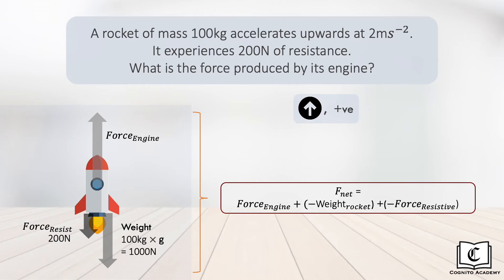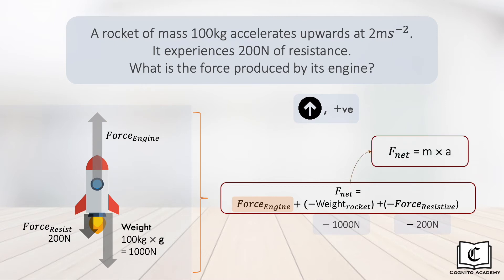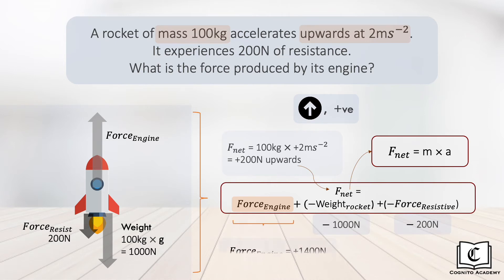We are tasked to find the force produced by the engine. Assigning respective values to the forces, we still need to find the net force. By Newton's second law, the net force equals mass multiplied by acceleration, giving a net force of positive 200 newtons, pointing upwards. We can now calculate the engine force, giving us positive 1400 newtons — meaning the engine produces a force of 1400 newtons upwards.